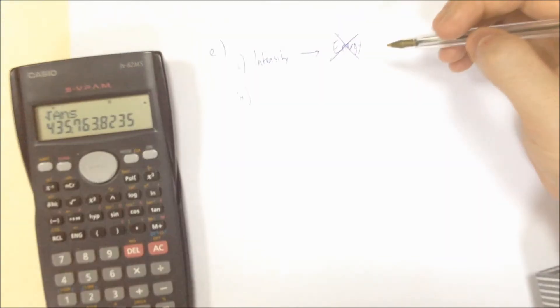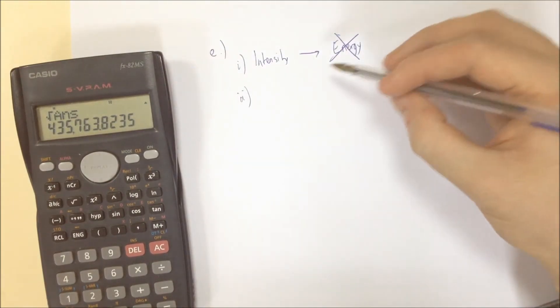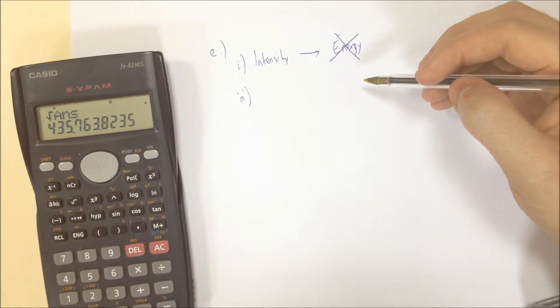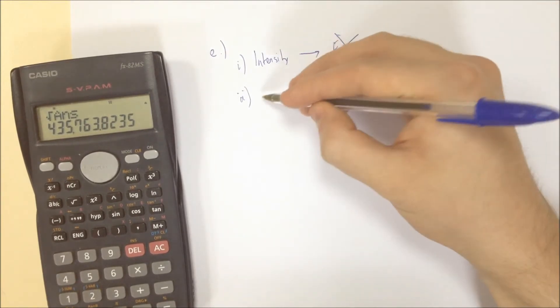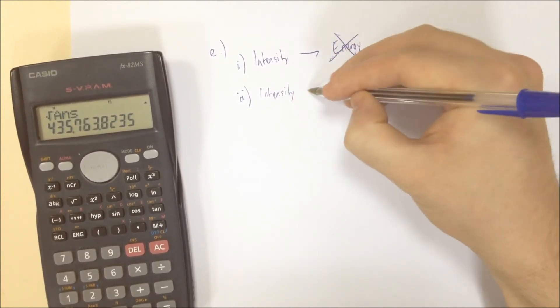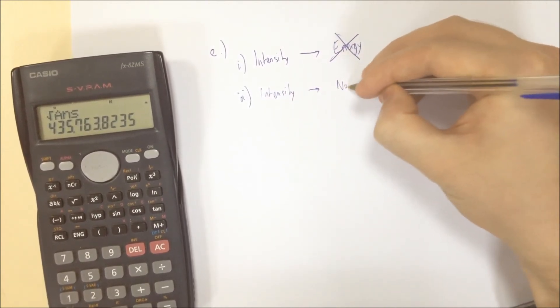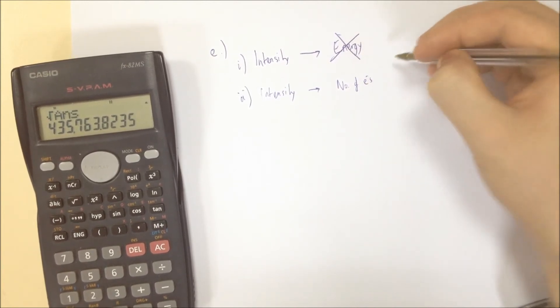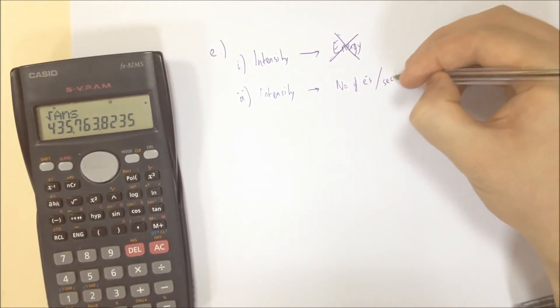On to the second part now. I'm just checking my camera is in focus there. Hopefully it was. If it wasn't, you can see now I hadn't rid of much. For part two, the number of electrons emitted per second. So this is the intensity. Does it increase the number of electrons per second? Number of electrons per second. Which I guess is the current number of electrons per second.